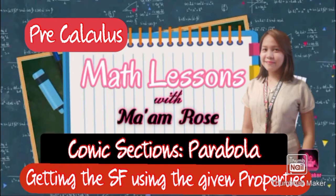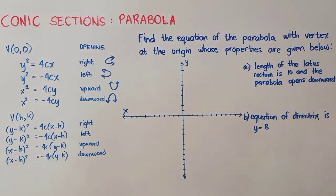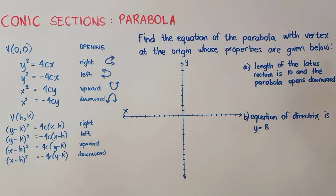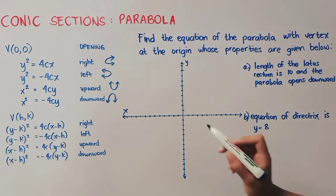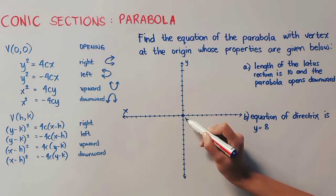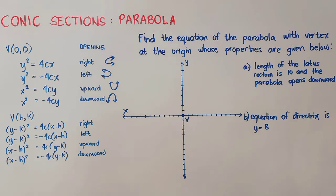In this video, we will get the standard form of a parabola using the given properties. Find the equation of the parabola with vertex at the origin whose properties are given below. I will be plotting here our vertex and we will be using this plane here for us to visualize each given below.